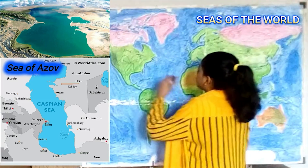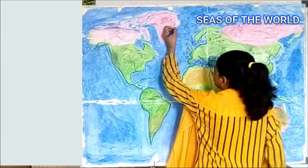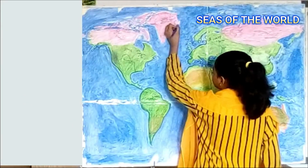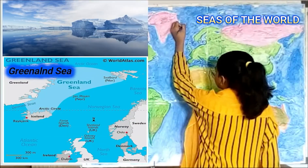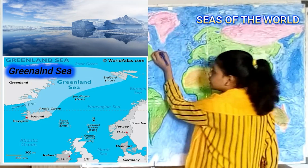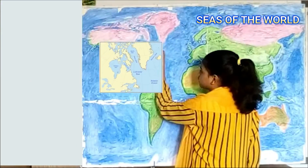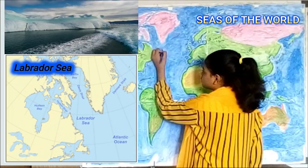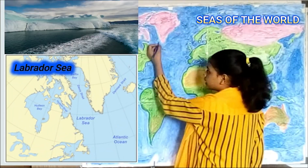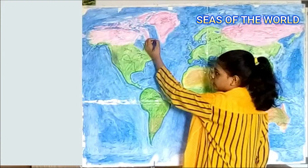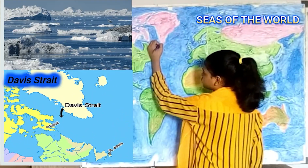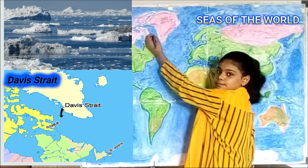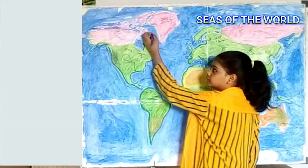Here is Green Line Sea. Here is Labrador Sea. Here is Davis Strait. Here is Baffin Bay.